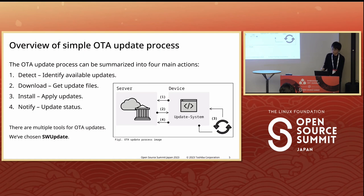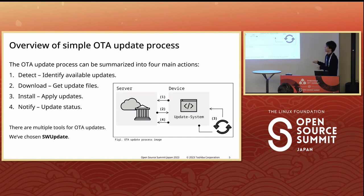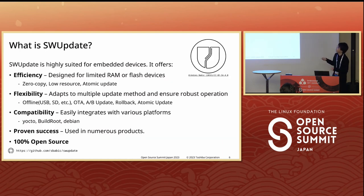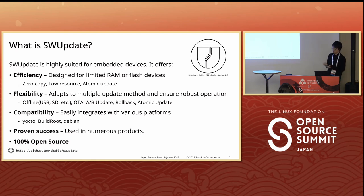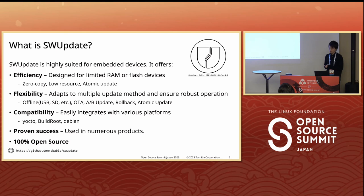There are multiple tools for OTA updates. We've chosen SW Update. SW Update is highly suited for embedded devices — its efficiency is designed for limited device resources like RAM or flash, and it offers flexibility and compatibility, adapting to various situations. Moreover, there are many practical implementations and applications, which you can check on the SW Update website. It also has 100% open-source operations and active development activity. So we've chosen SW Update.